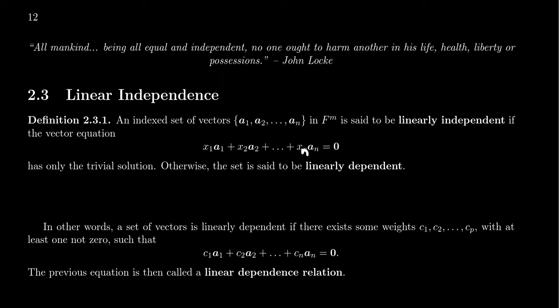A set of vectors, say a₁, a₂, all the way up to aₙ, in the vector space Fⁿ, is said to be linearly independent if the vector equation x₁a₁ + x₂a₂ + ... + xₙaₙ = 0 has only the trivial solution. What do I mean by the trivial solution here? When you have a vector equation equal to zero, a linear combination equal to zero, we could rewrite this as a matrix equation.